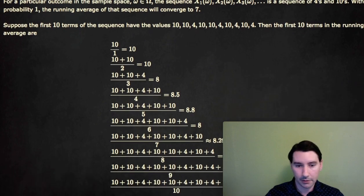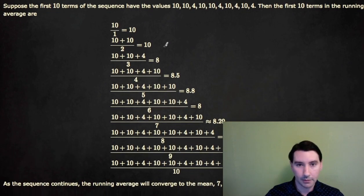Then we can compute the partial averages. The first one is just 10, because it's 10 over 1. Then, to go to the second number, we would have 10 plus 10 over 2, which equals 10. And by the third number, we have 10 plus 10 plus 4 over 3, which equals 8. And by the fourth number, 10 plus 10 plus 4 plus 10 over 4, which is 8.5.